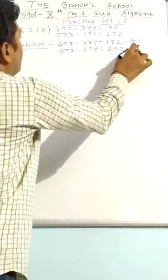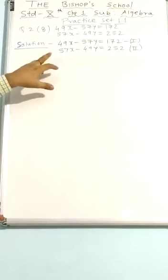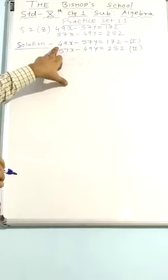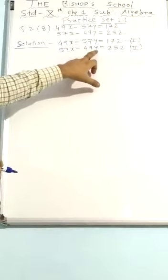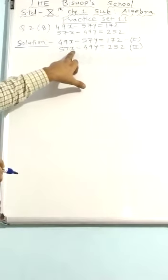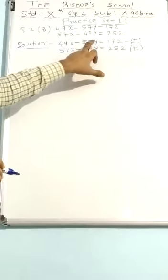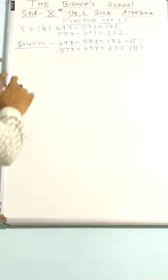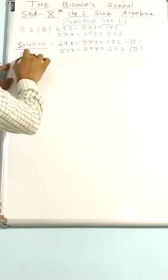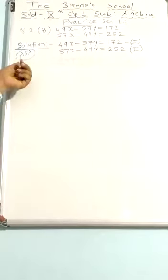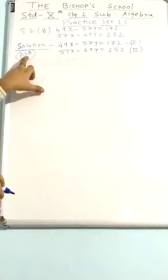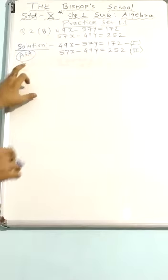Here we can see that there is an exchange of coefficients: 49 is along with x in the first equation and along with y in the second; 57 is with x in the second and with y in the first. Whenever we have this kind of question, we use the ASA method — Addition, Subtraction, Addition. First we add both equations, then subtract, then add again to solve.